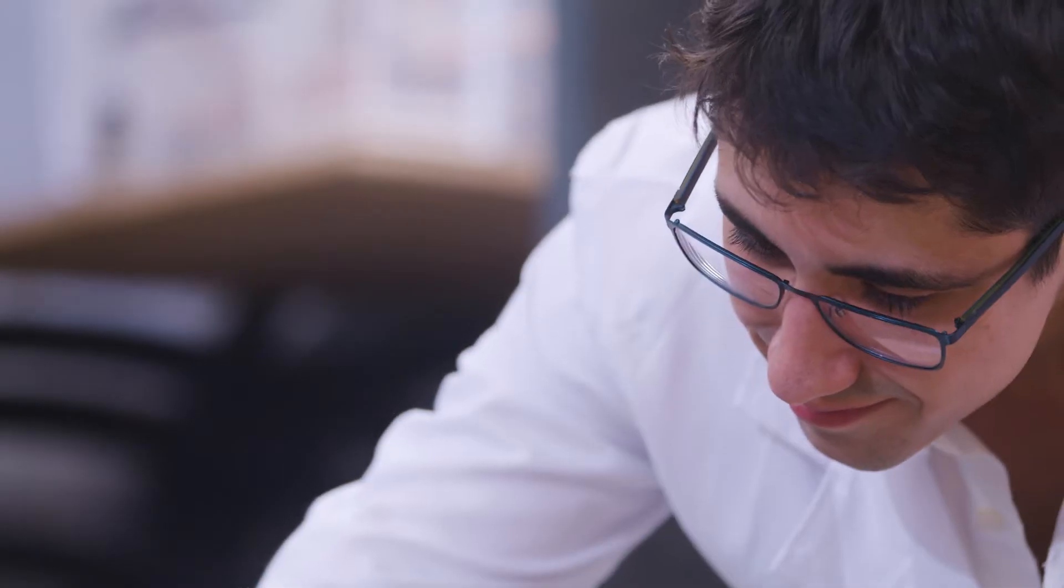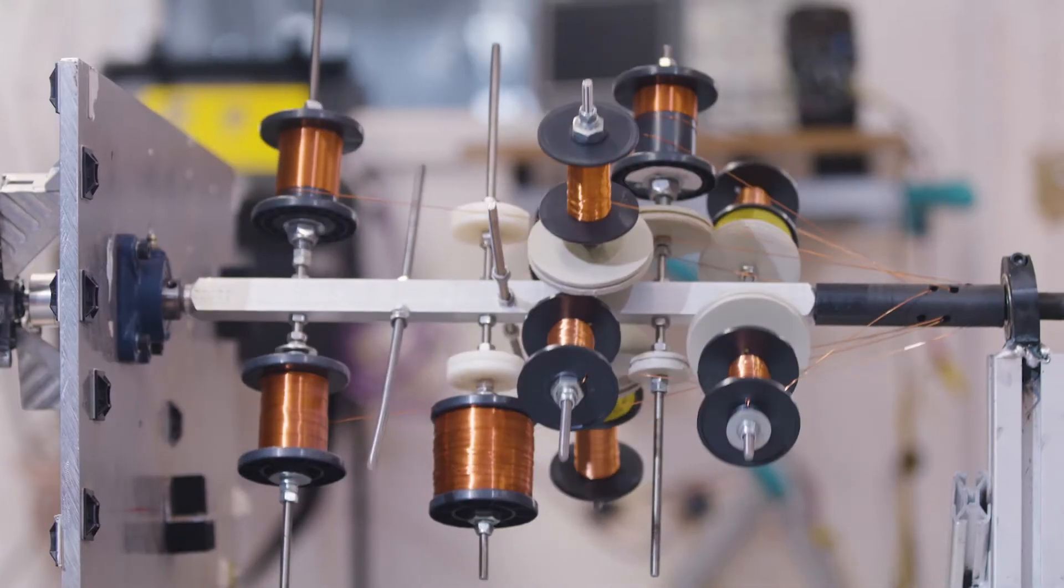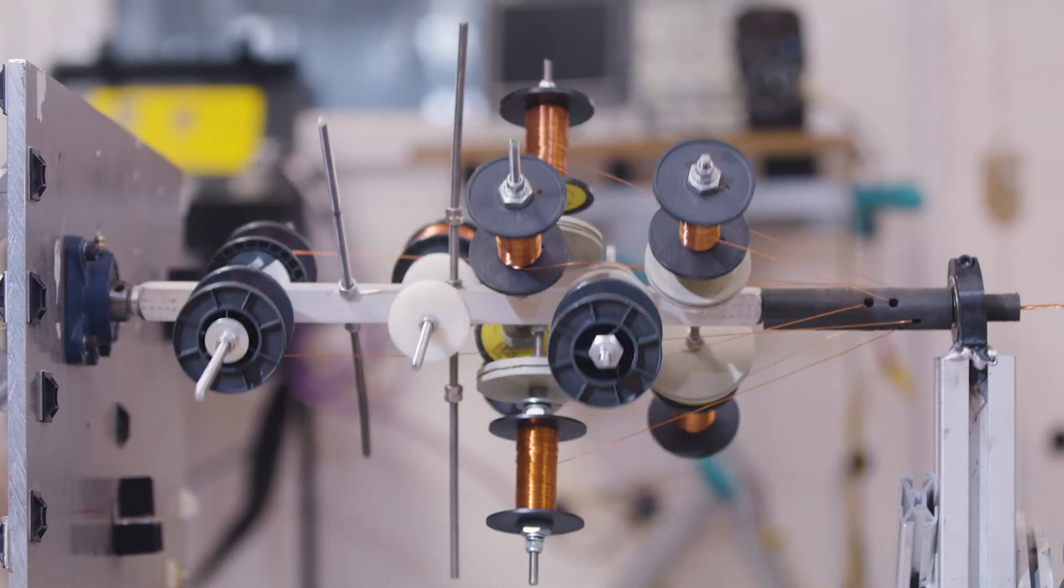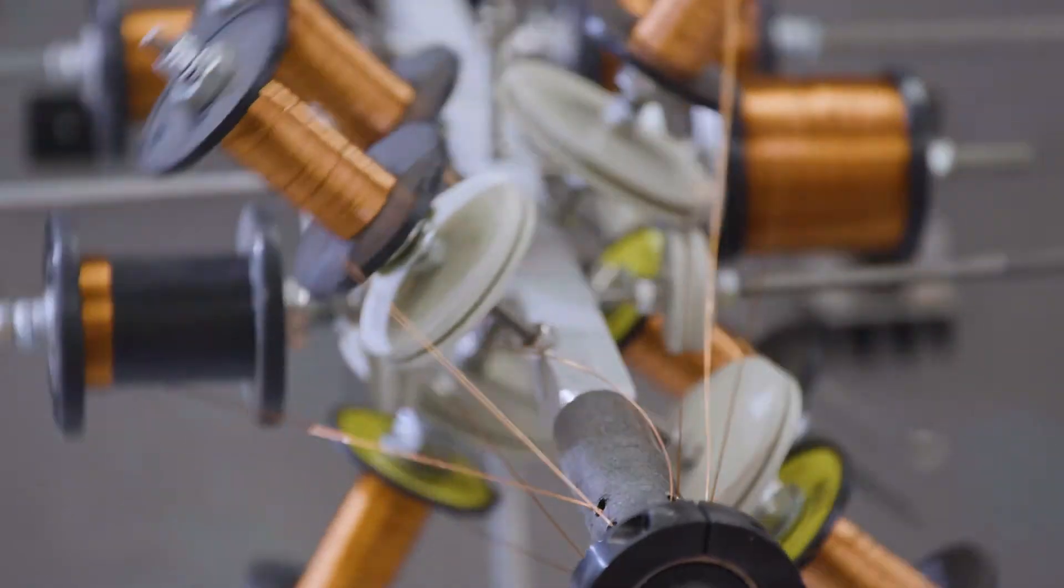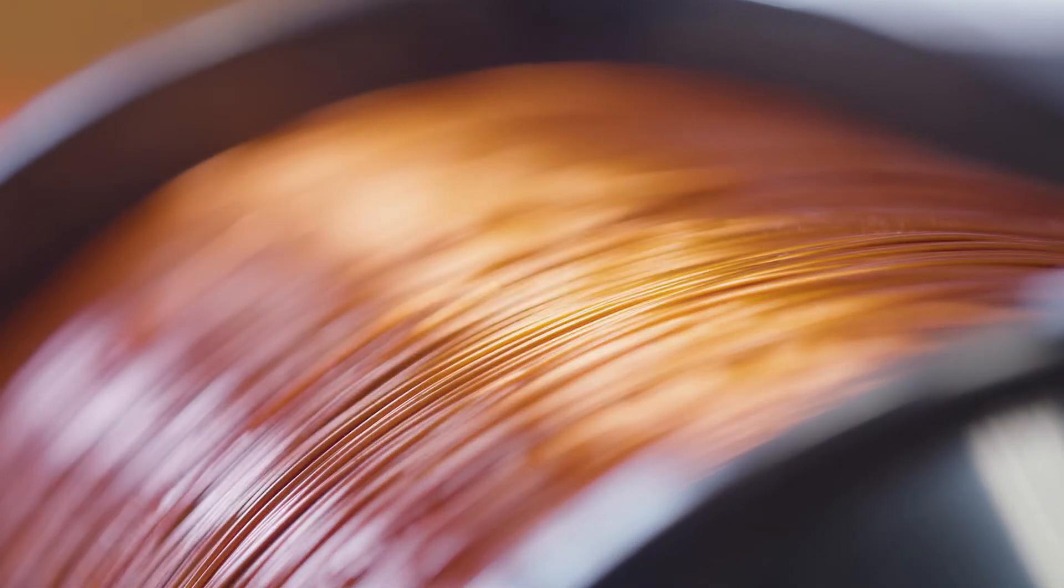One of the things that people tend to think when they need to reinforce a grid is we'll just put in bigger cable. It takes six tonnes of carbon to produce one tonne of copper. So if you double the cable, you double the carbon.